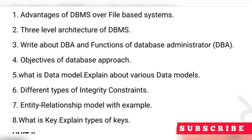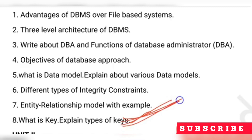The next question is: what is a key and explain the types of keys. A key is an element by which you could find the remaining details in your database. For example, if you have a student ID, that becomes a key to know the remaining details of a student. You will have primary keys, super keys, composite keys, and foreign keys — different kinds of keys used for different purposes that you need to explain from the first unit.